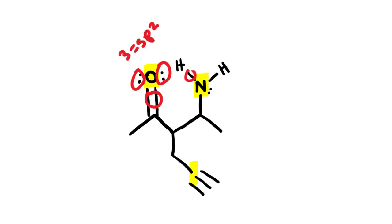If you look at the nitrogen, you have a single bond, single bond, single bond, and lone pair. Four groups corresponds to sp3.